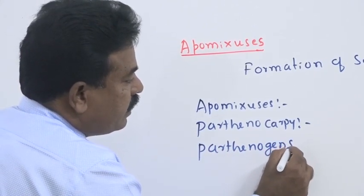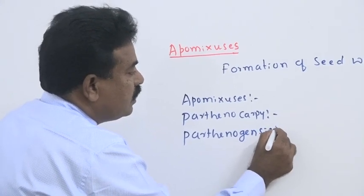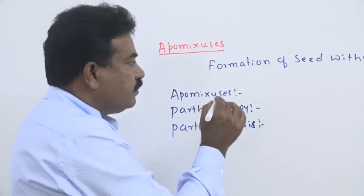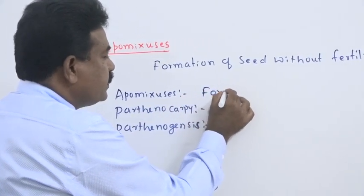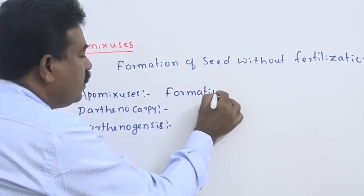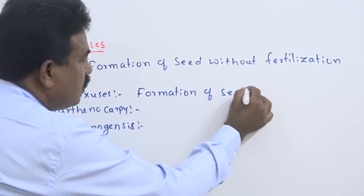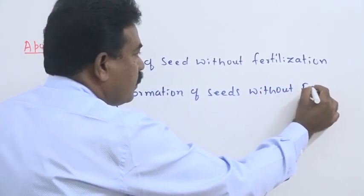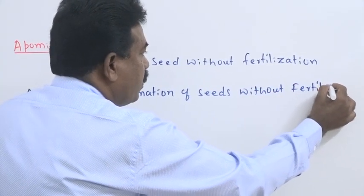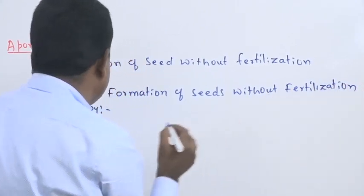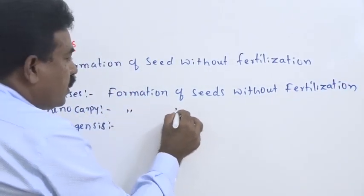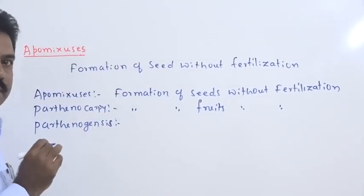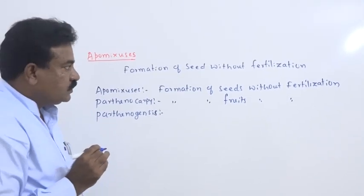These three biological processes take place without fertilization. Suppose the first process, apomixis, formation of seeds without fertilization. We call apomixis. Then formation of fruits without fertilization, we call parthenocarpy.